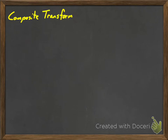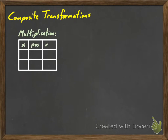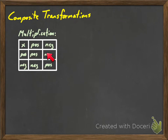For composite transformations, what we need to remember is it's just like multiplication. With multiplication, when we have two positive numbers and we multiply them, you get a positive number. If you have a negative and a positive and you multiply them together, you get a negative. Negative and positive, you get a negative. If you multiply two negatives, it goes back to positive.